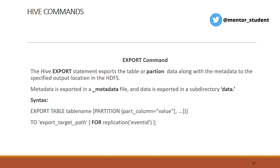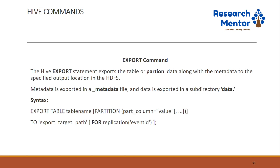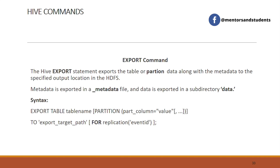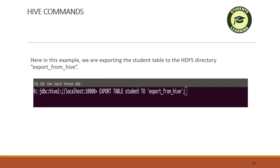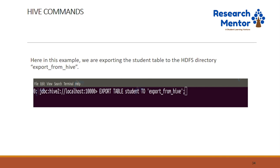The next is export command. The export command exports the table or partition data along with the metadata to a specified output location in HDFS (Hadoop Distributed File System). Syntax: EXPORT TABLE table_name PARTITION (col=value). For example, exporting the student table to an HDFS directory: EXPORT TABLE student TO 'export_from_hive' — where the HDFS directory is 'export_from_hive' and the table name is student.